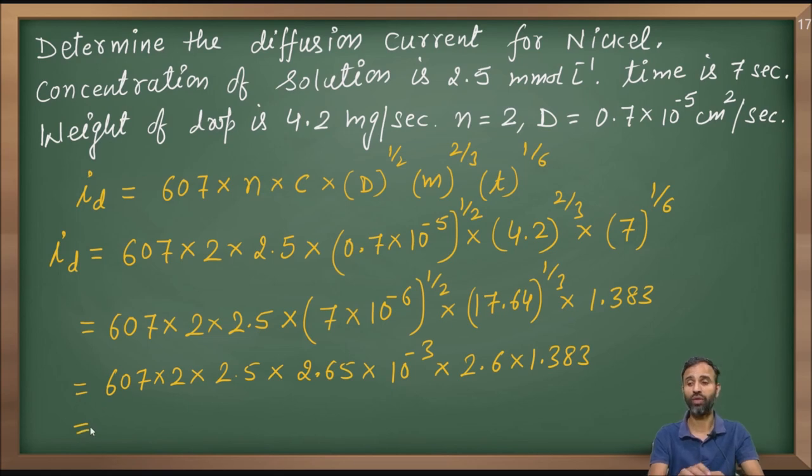When we multiply all of them, the value comes out to be 28920 into 10 raised to power minus 3 and the result is in micro ampere. So, value comes out to be 28.92 micro ampere.